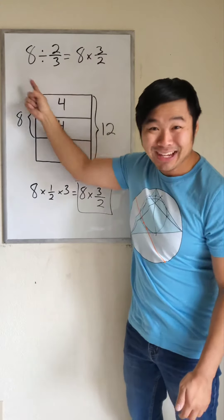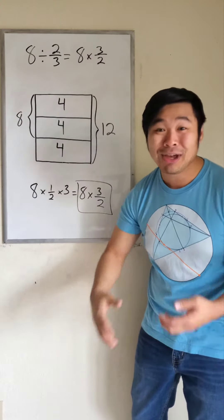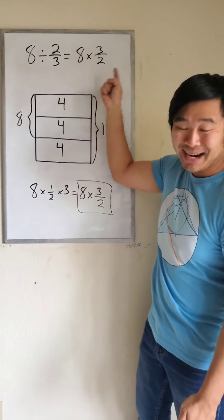So if 2 thirds of the whole is worth 8 and we need to figure out what the whole is worth, we can find the answer by doing 8 times 3 halves.